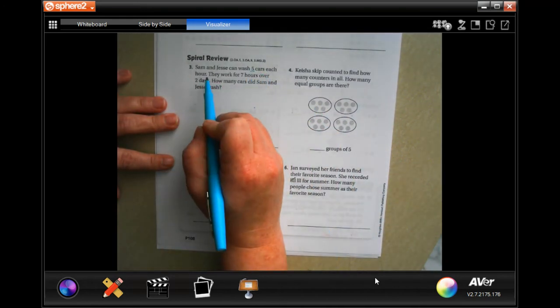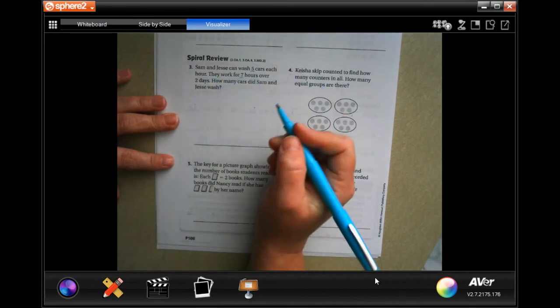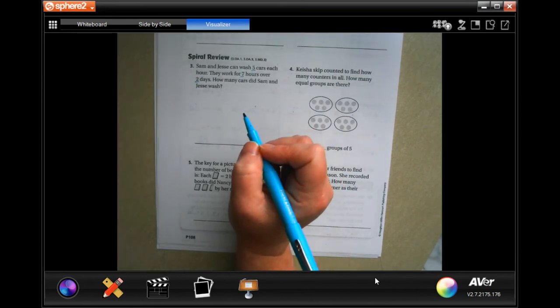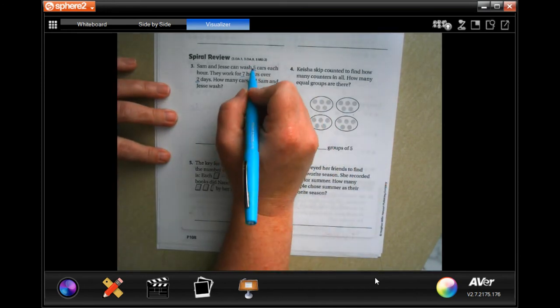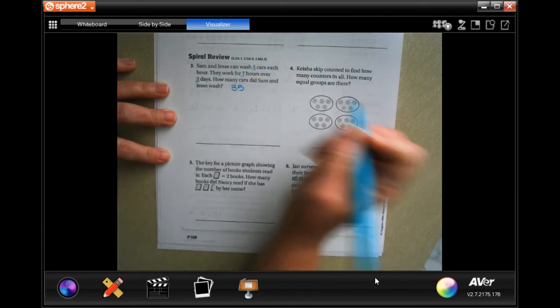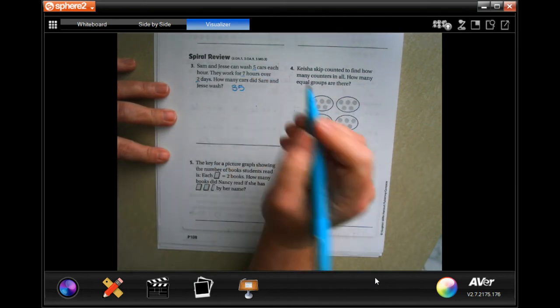They work for seven hours over two days. How many cars did Sam and Jesse wash? Well, five times seven is 35, but they did that for two days.